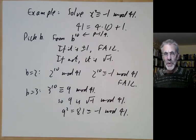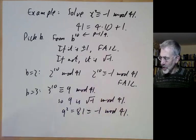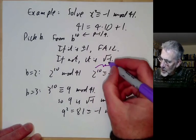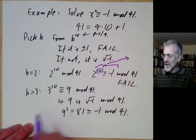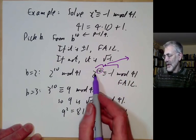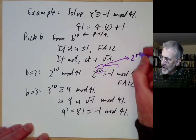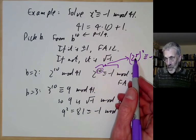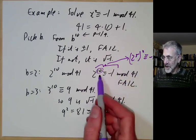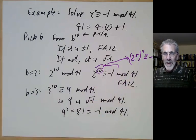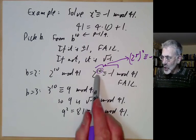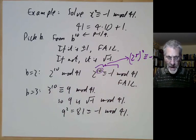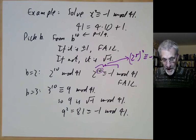By the way, that's what a computer would do. If you were a human, you might notice that in the first step — since 10 is even and 2 to the 10 is minus 1 — this means 2 to the 5 squared is congruent to minus 1. So 2 to the 5, which is 32, would also give a square root of minus 1. If you were really paying attention, you could have shortened the calculation. We'll see this idea come up again later in a different context.